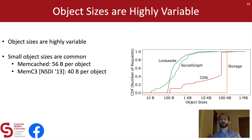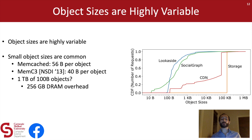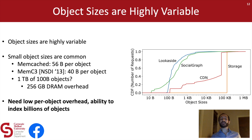This overhead adds up in absolute terms as well. We know we want to build large caches, so consider what would happen if I had something like a 1-terabyte cache full of 100-byte objects. Given this level of overhead, I would require hundreds of gigabytes of DRAM — potentially several machines' worth of DRAM overhead — just to fill a 1-terabyte cache. In general, we conclude that we need to find a way to achieve low per-object overhead and also index billions of objects efficiently.